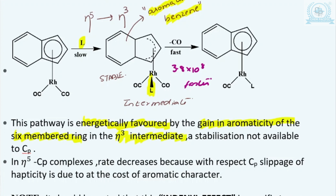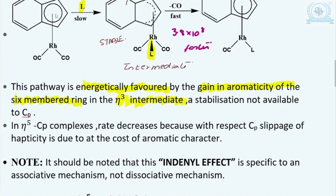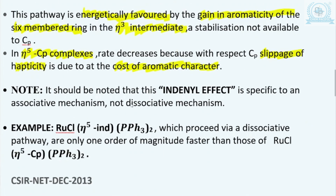This stabilization is not available in the CP ring. In the CP ring, the rate decreases considerably because when slippage of the ring occurs from η5 to η3 mode, it takes place at the cost of the aromatic character of the system. In the η5 mode it was completely aromatic, but on slippage the aromaticity is considerably reduced, resulting in destabilization of the intermediate. That is why when the intermediate is less stable, the reaction becomes much slower. In CP complexes, the rate decreases due to loss of aromatic character.